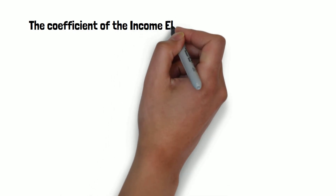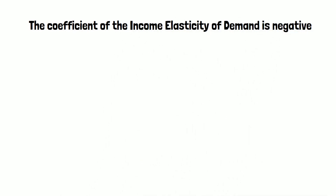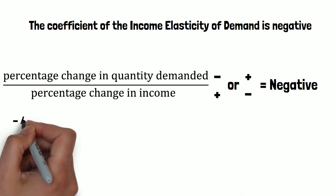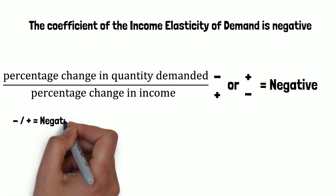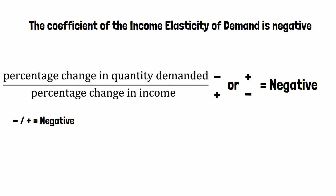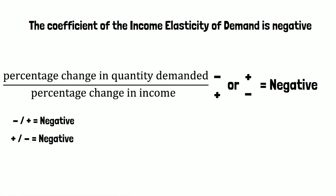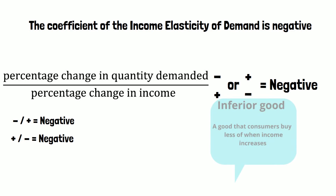Scenario 2: the coefficient of the income elasticity of demand is negative. The outcome of the division is negative when the percentage change in quantity demanded is negative whilst the percentage change in income is positive, or when the percentage change in quantity demanded is positive whilst the percentage change in income is negative. The reason for this is that negative divided by positive equals negative, and positive divided by negative is also negative. When the outcome of the division is negative, this means that people demand less of a good when their income rises.